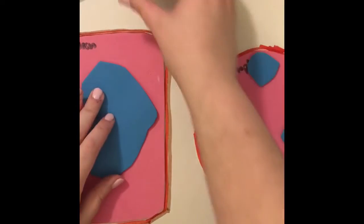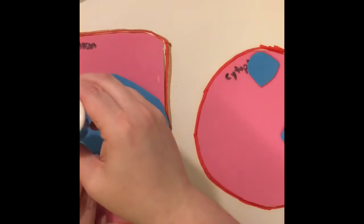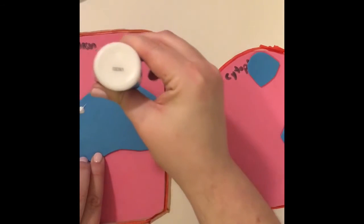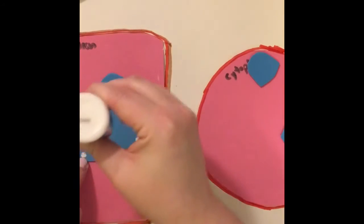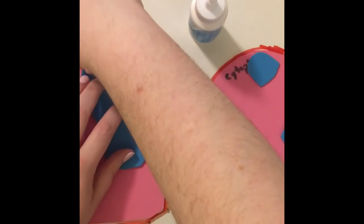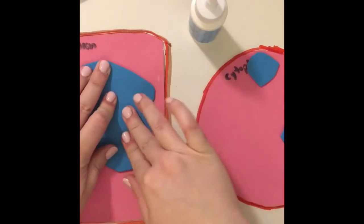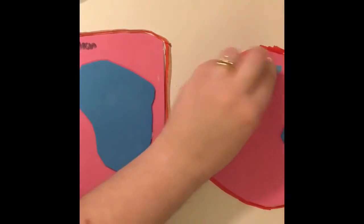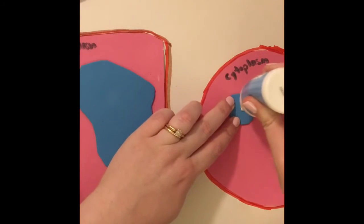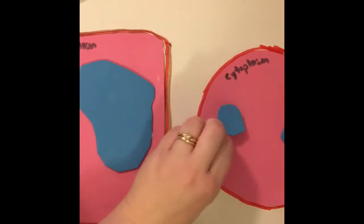So then once you have it placed where you'd like, flip it over, add some glue, and glue it into place. And then do the same thing with your animal cell. With my animal cell ones, they're a little bit smaller, so probably one dot will work.